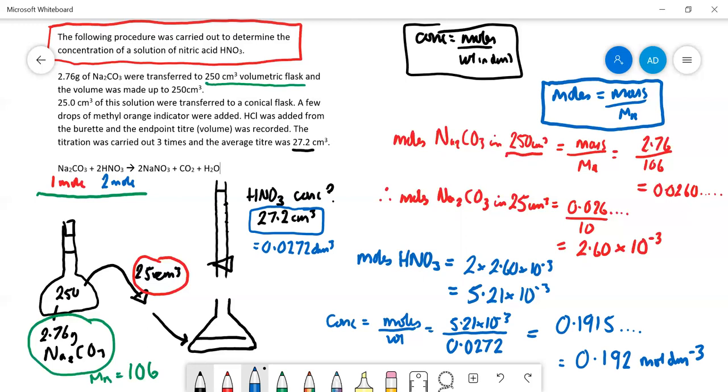That is a typical A-level titration calculation, one of the more basic ones. What we've done here is make up a solution in a volumetric flask, take out 25 centimeters cubed, and then titrate that. In this case, we were working out the concentration of the nitric acid. Sometimes you might know the concentration of the nitric acid and have impure sodium carbonate, and you can work out the purity of your sodium carbonate. That will be the next video.